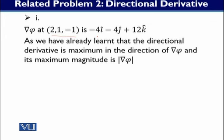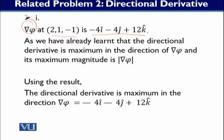So this is what we discussed. The direction is already available to us — del phi is already given as a vector. So this problem is resolved immediately. Using this result, the directional derivative is maximum in the direction del phi = -4i - 4j + 12k.